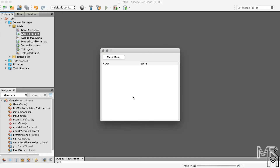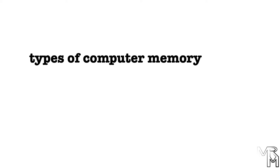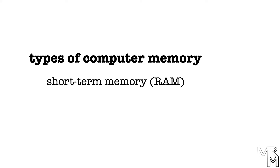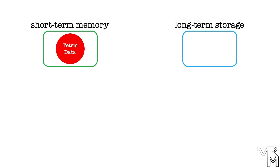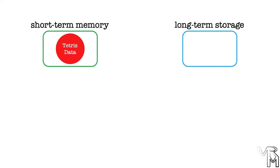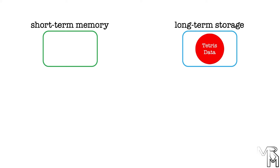Why does this happen? To answer this question, for the first time on this channel we will cover a topic normally covered in the very first computer science lectures. Computers have two types of memory: short-term memory, also known as RAM, and long-term storage. While our Tetris game is running, all its data including the leaderboard data is stored in short-term memory, and when our game terminates, all of that data disappears. To save our leaderboard data we need to move it from short-term memory to long-term storage, meaning we need to save it in a file.